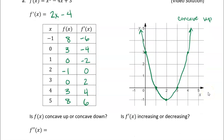Is f of x concave up or concave down? We already answered that — it's concave up. And f prime of x is increasing. Now let's find the second derivative. The derivative of 2x is 2, and the derivative of negative 4 is 0, so the second derivative is just 2. Notice it's a positive number, which tells us the derivative is increasing.